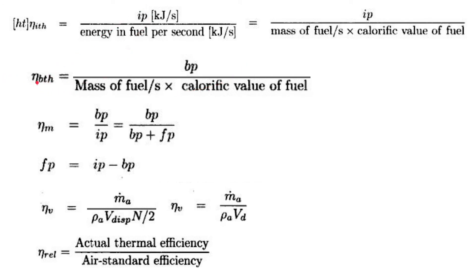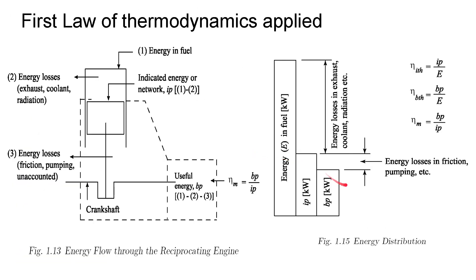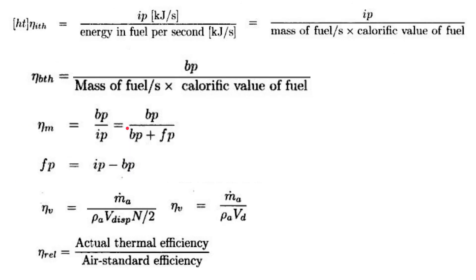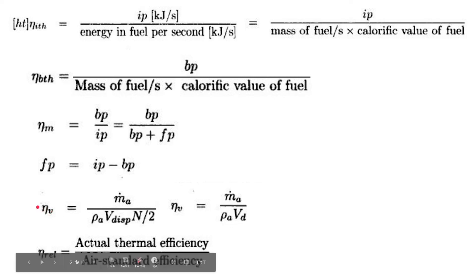Similarly, brake thermal efficiency eta_BTH = BP / (calorific value of fuel × mass flow rate of fuel), where mass flow rate is in kg/s and calorific value in kJ/kg. Mechanical efficiency eta_M = BP / IP. The difference between BP and IP is the frictional power loss, so IP = BP + frictional power, and frictional power = IP − BP.